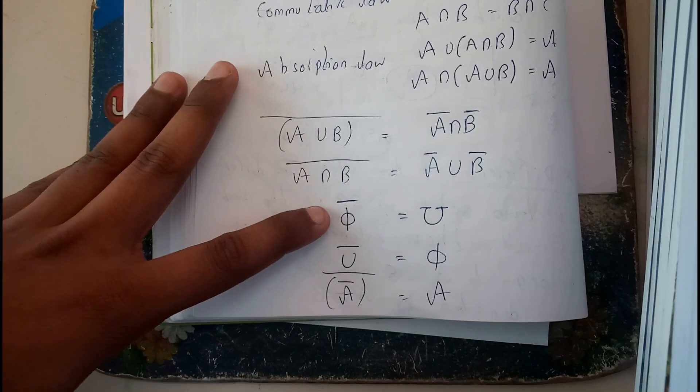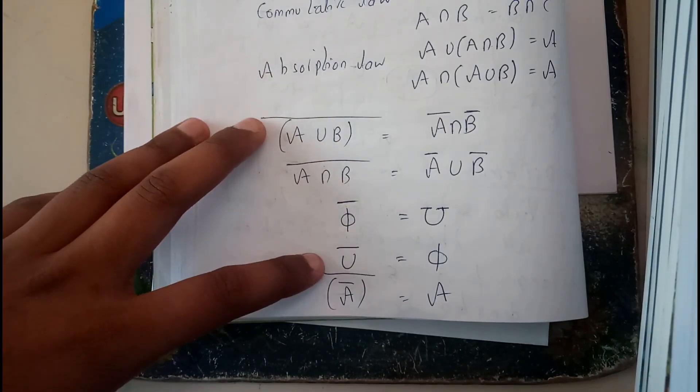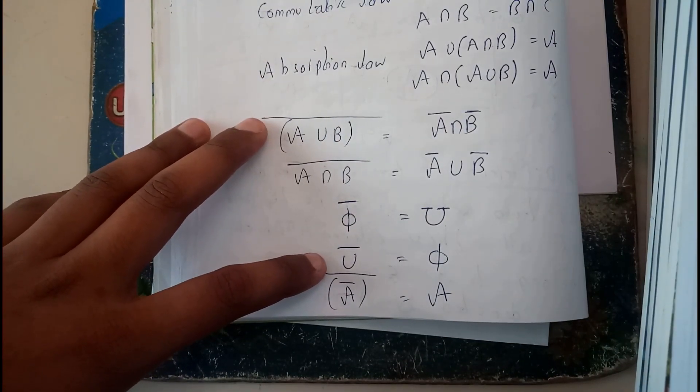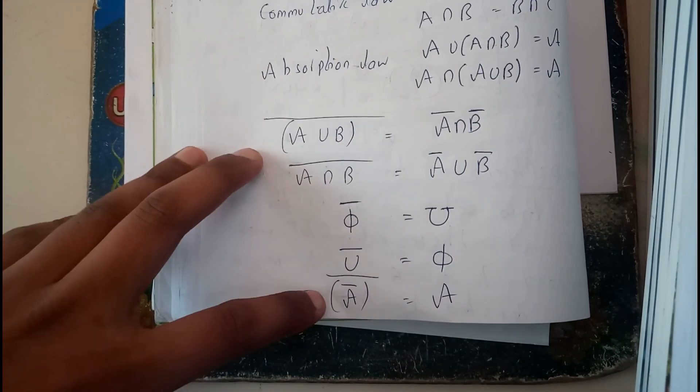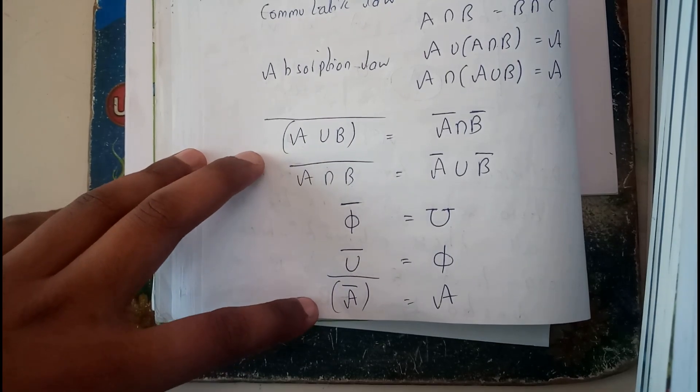A intersection empty set equals empty set. Empty set intersection universal set equals empty set. Universal set intersection A equals A. A bar whole bar equals A.